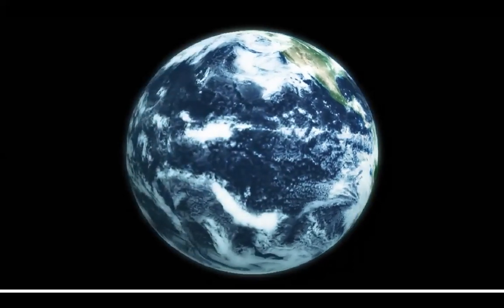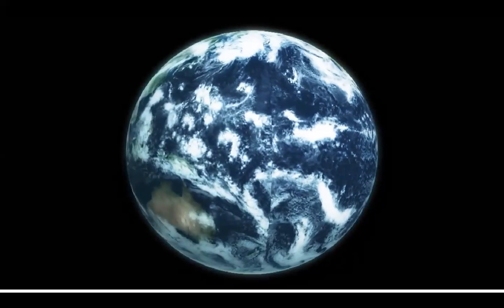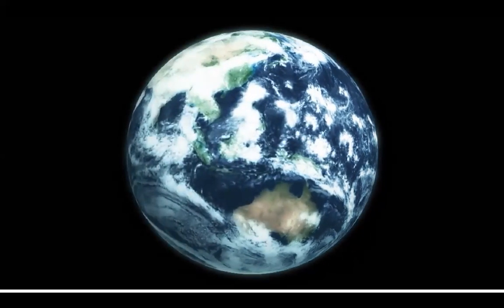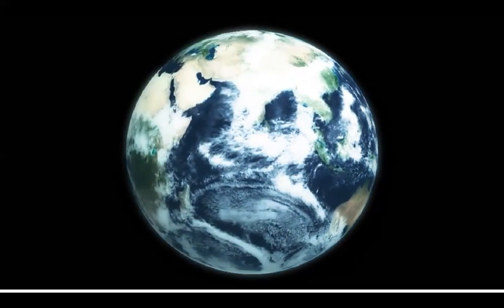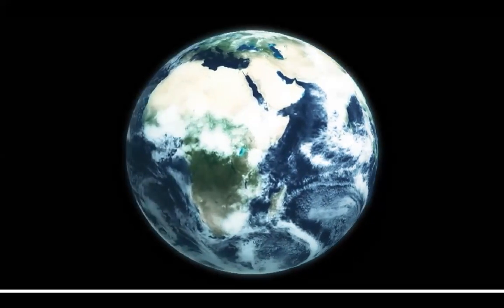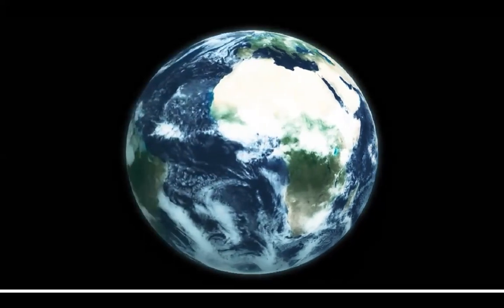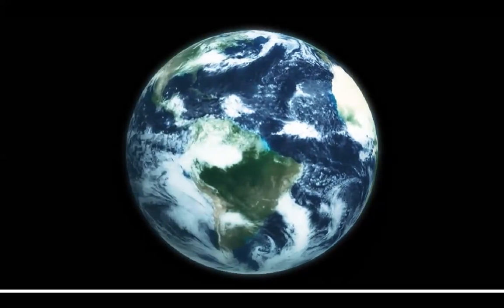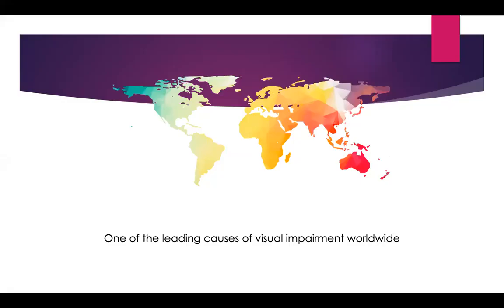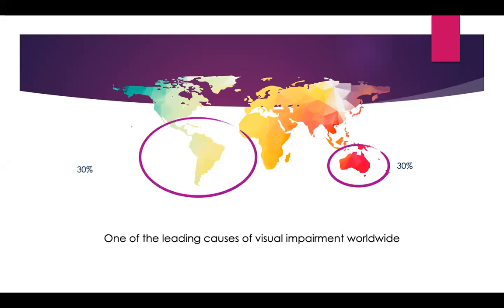We know that myopia is a worldwide epidemic. It's hard to compare the coronavirus to myopia because the coronavirus can be deadly and is contagious, but myopia is something that affects everybody around the world. In Australia it's about 30%, and in South America, Central America, and North America it's about 30% or more. The main issue is really in Asia, where we have almost a hundred percent of the continent becoming myopic.